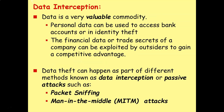Next we're going to look at data interception. Data is a very valuable commodity. Personal data can be used to access bank accounts or in identity theft. The financial data or trade secrets of a company can be exploited by outsiders to gain a competitive advantage. Data theft can happen through methods known as data interception or passive attacks, such as packet sniffing or man-in-the-middle attacks.